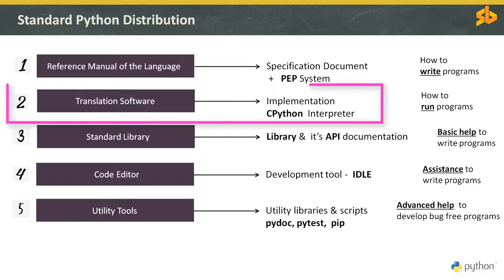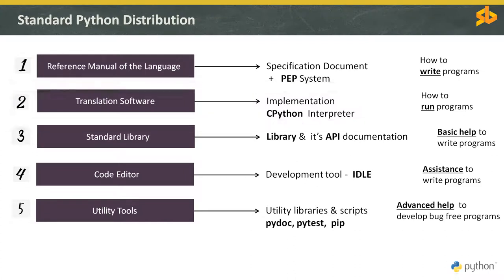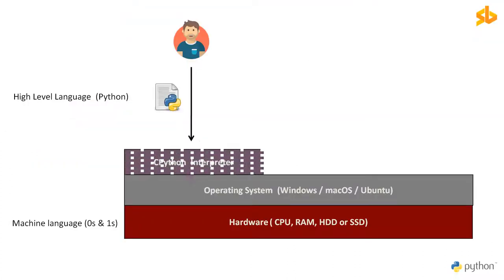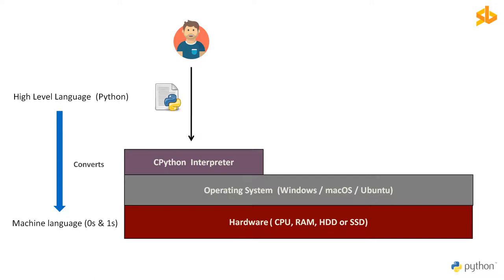There is the Python interpreter CPython, which is the standard implementation of the Python language. It translates the Python programs we write into machine code that's understood by the computer and executes it. An interpreter is a translation software that translates programs written in high-level languages like Python into low-level language like machine code and executes it.